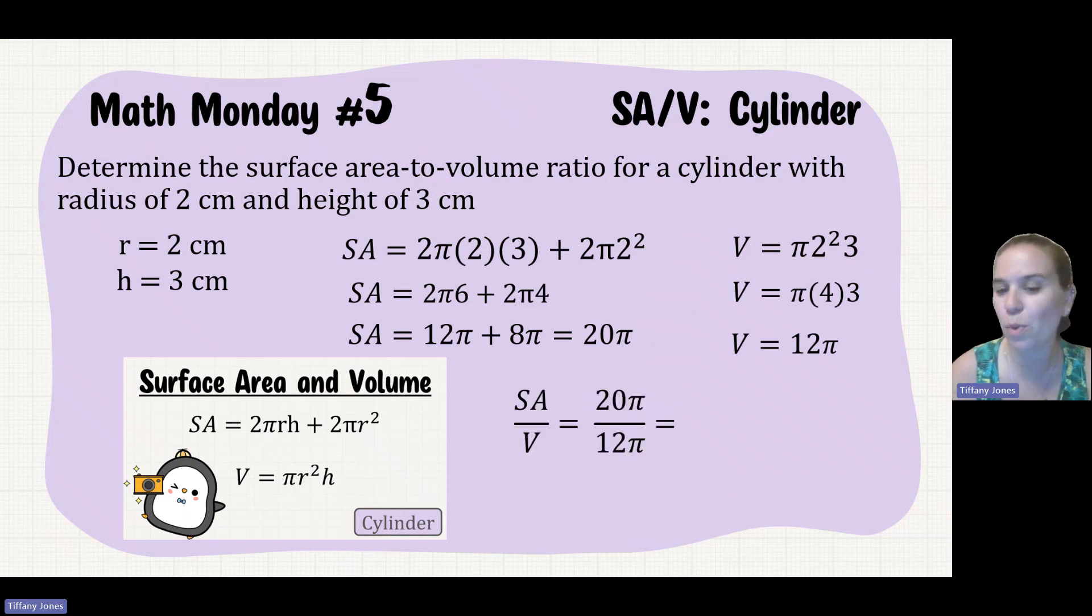So surface area to volume ratio is going to be 20π over 12π. If you reduce that, you're going to get 5 over 3.